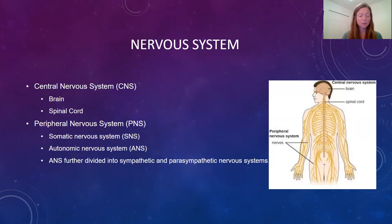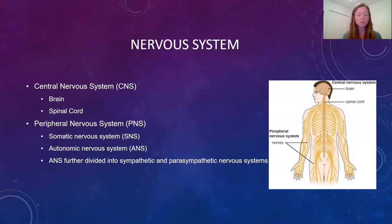Our nervous system is responsible for both conscious and unconscious actions — voluntary movement, breathing, etc. It includes the brain, spinal cord, and the peripheral nerves. There are two major divisions: the central nervous system and the peripheral nervous system. The CNS includes the brain and spinal cord, whereas the PNS includes cranial nerves and spinal nerves.